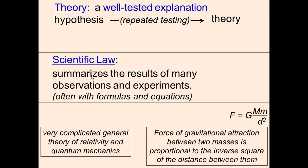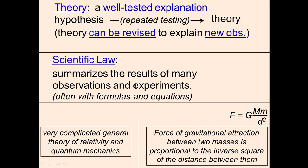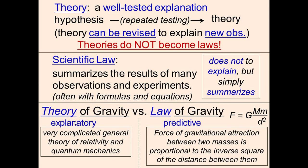Here is a comparison. The definition is a theory is a well-tested explanation. For example, you'd make a hypothesis, repeat testing, make a theory, and explain it thoroughly. A scientific law summarizes as a result of many observations and experiments, and it often has to do with formulas and equations. Down here is the theory of gravity versus the law of gravity. The law of gravity has a formula here. This pretty much just summarizes the formula and just predicts. The theory of gravity explains it thoroughly and is very complicated. Remember, theories can be revised to explain new observations. And once again, theories do not become laws. Laws do not become theories.